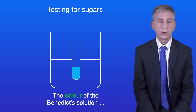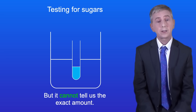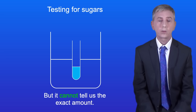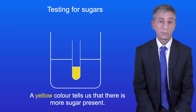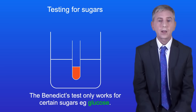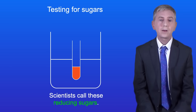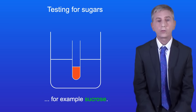The colour of the Benedict solution gives us an approximate idea of the amount of sugar present, but it cannot tell us the exact amount. A green colour tells us there's a small amount of sugar, a yellow colour tells us there's more sugar present, and a brick red colour tells us there's a lot of sugar present. The Benedict's test only works for certain sugars such as glucose — scientists call these reducing sugars. The Benedict's test will not work for sugars which are non-reducing, for example sucrose.